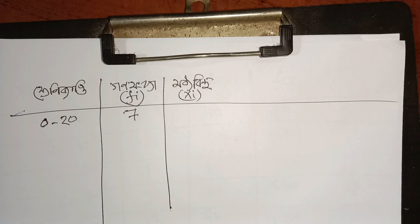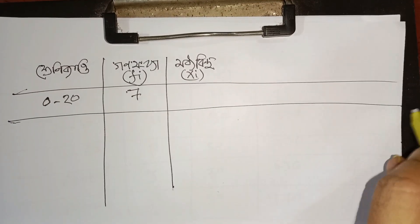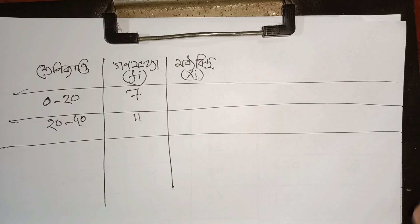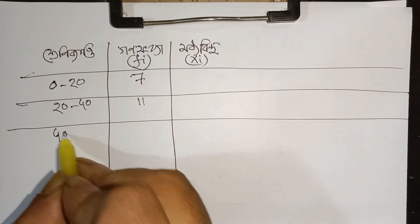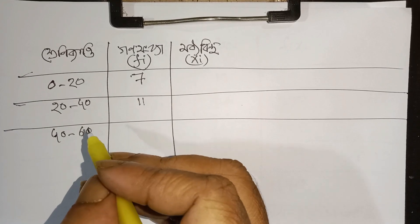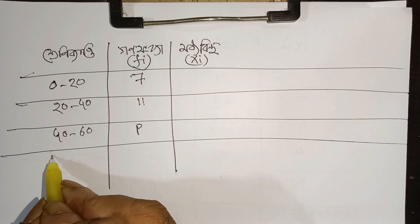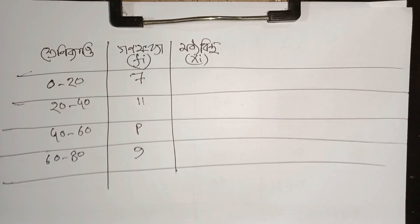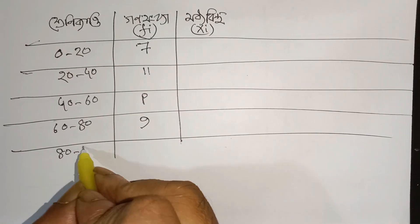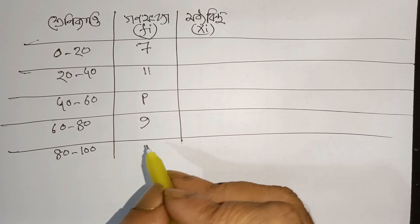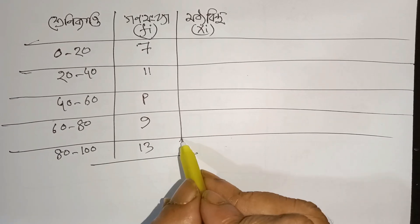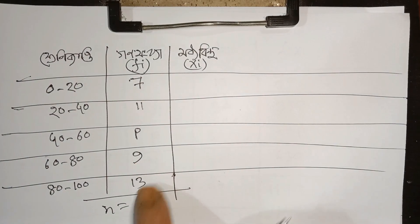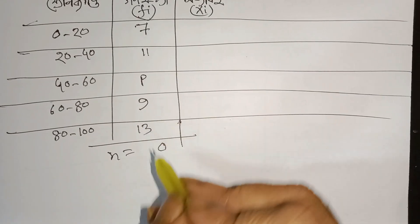20 to 40, 20 to 40 — the frequency row: 11 in that row. 40 to 60 to 80 — P in that row is 60 to 80. Then 80 to 100 — count the numbers: last one is 3 and 4.